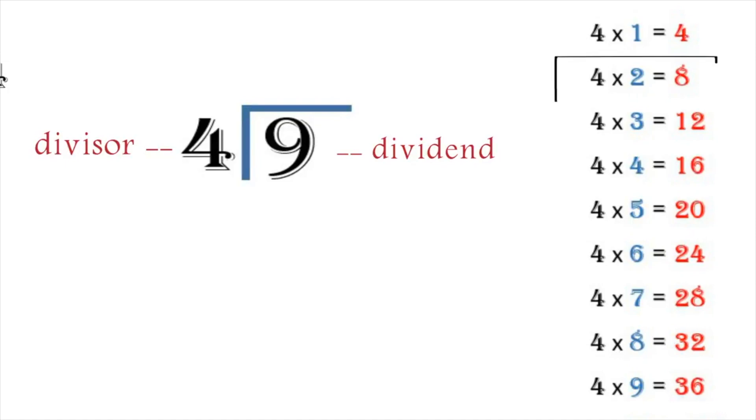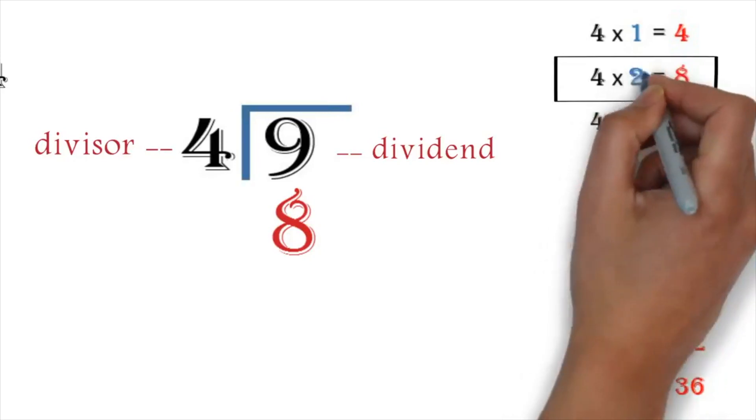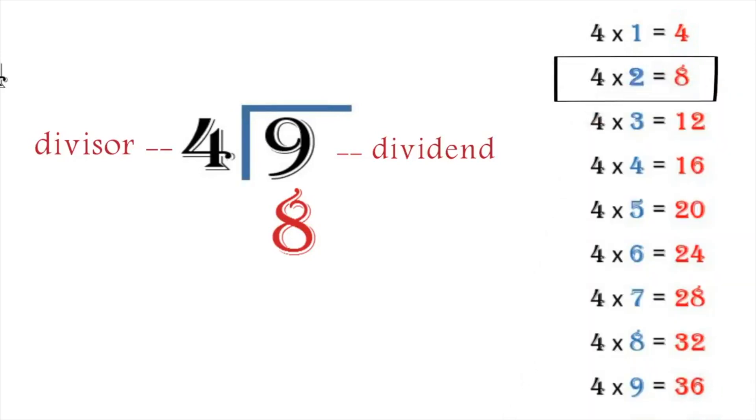Here, we will see that 8 will be the closest to 9. We put the 8 here. Then, we find the number that multiplied the 4 to get 8. We see that the number is 2. So, we put the 2 as the quotient. The final step is to subtract the 8 from the 9 to get the remainder of 1. So, we can write our final answer as 2 remainder 1.